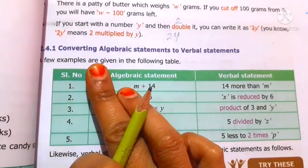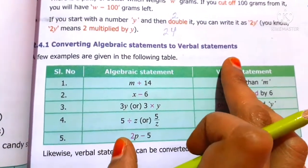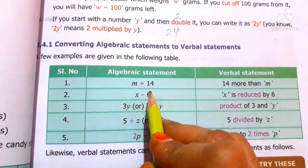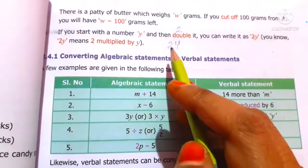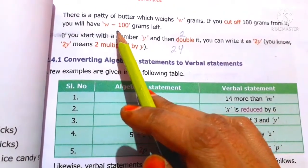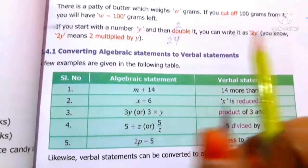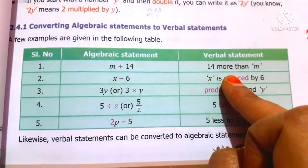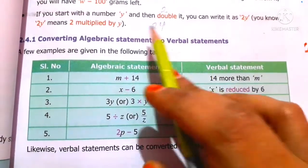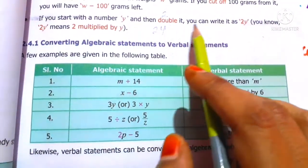Now you see converting algebraic statements to verbal statements. An algebraic statement is something like 2y or w minus 100. The corresponding verbal statement describes it in words. How do we do this?